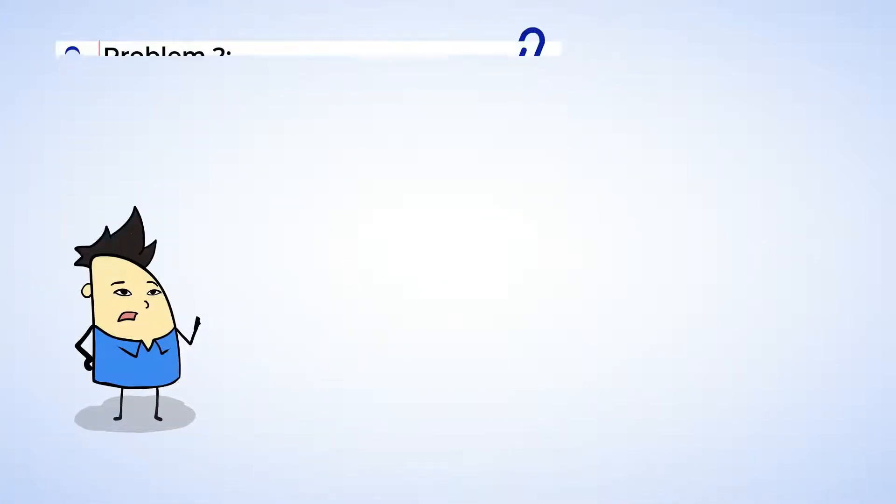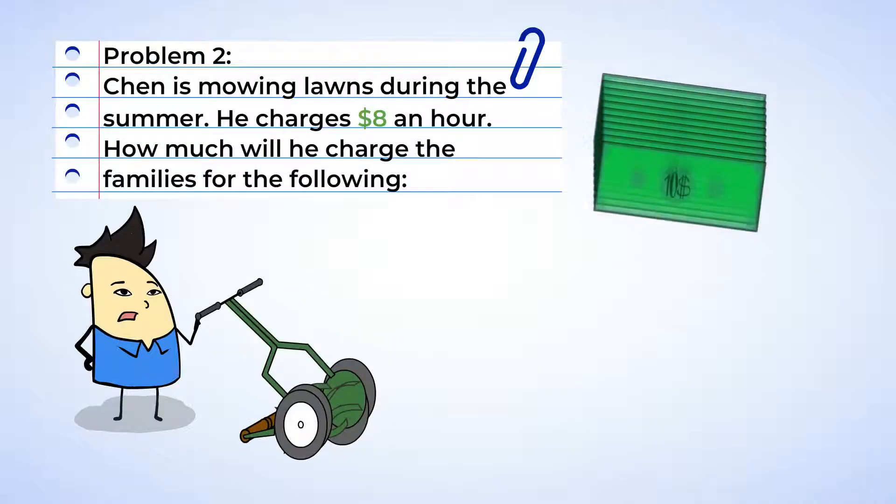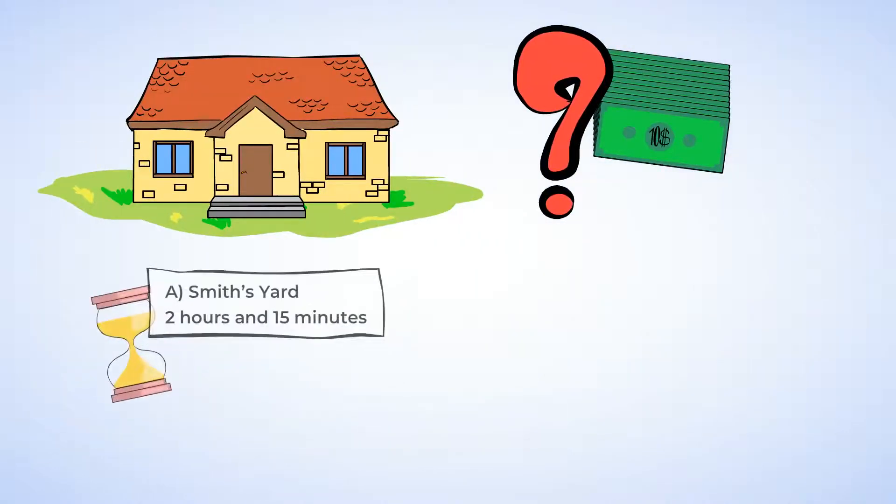Yeah, summer jobs. What a great way to earn money. Chen is mowing yards and charges $8 an hour. Let's see what each of the families owes him for his hard work. First, the Smiths.